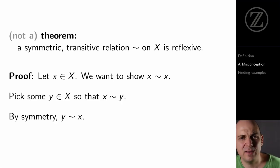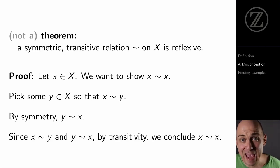Now pick some y, any y, so that x tilde y, and then apply symmetry to conclude that y tilde x. Now we know that x tilde y and y tilde x, so by transitivity, we know that x tilde x, which is what we wanted to show.